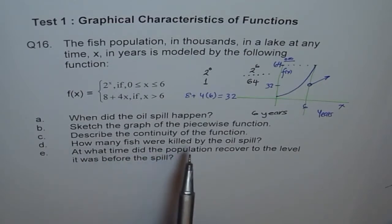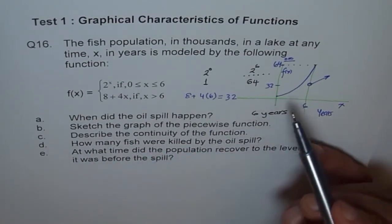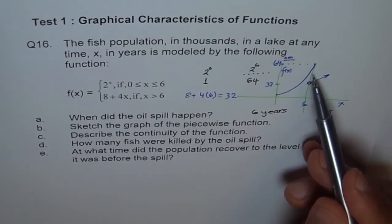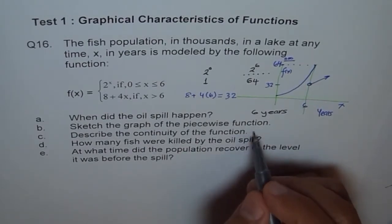Describe the continuity of the function. Of course, you can see after 6 years, there's a discontinuity. This is called jump discontinuity.